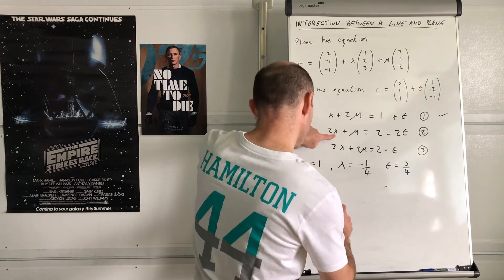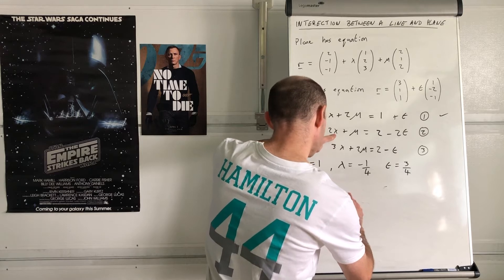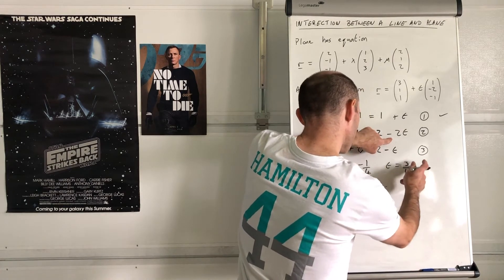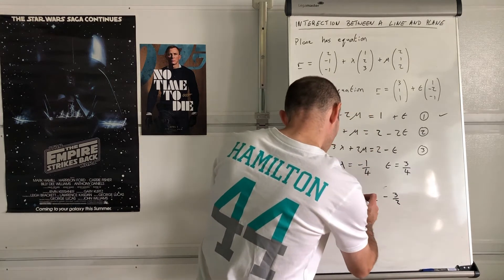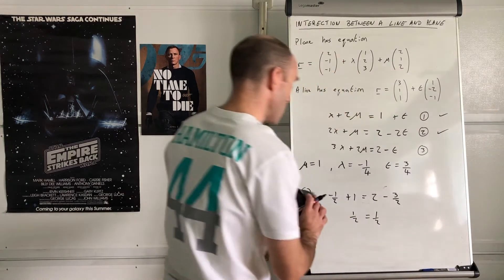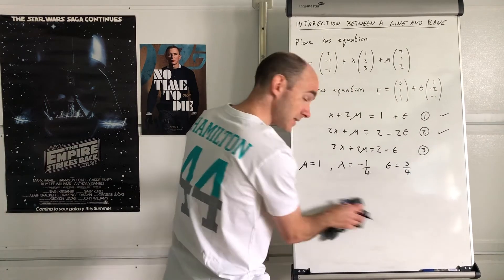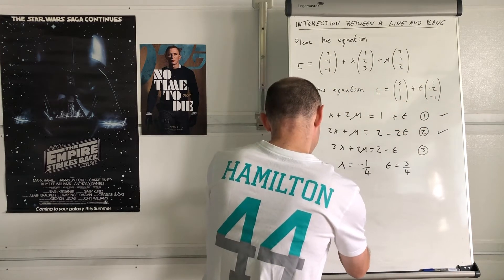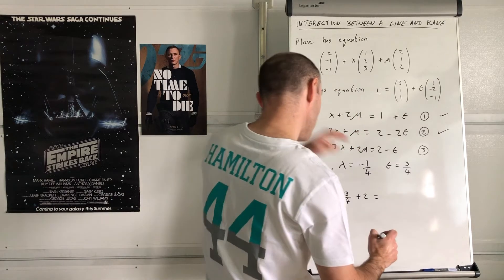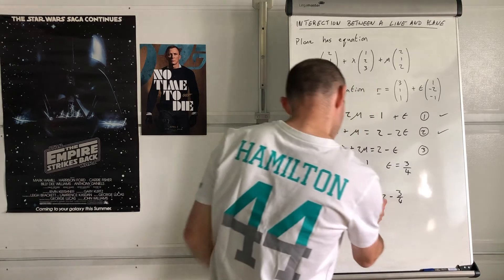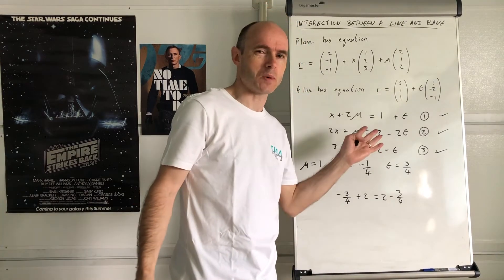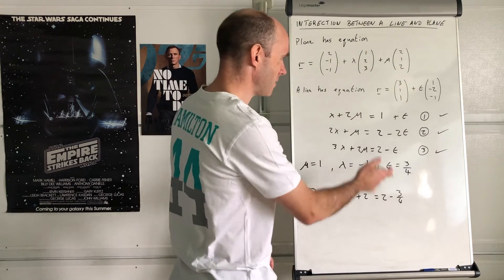Checking equation 2: 2(-1/4) + 1 = -1/2 + 1 = 1/2, and 2 - 3/2 = 1/2. That works. Checking equation 3: 3(-1/4) + 2(1) = -3/4 + 2 = 5/4, and 2 - 3/4 = 5/4. That also works. Since the values satisfy all three equations, there is a point of intersection.